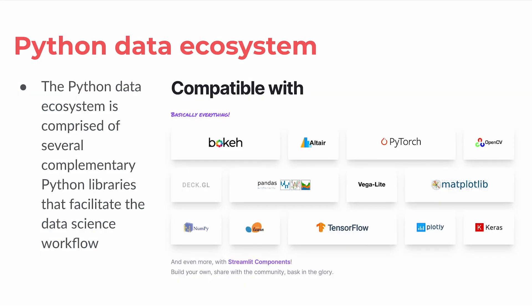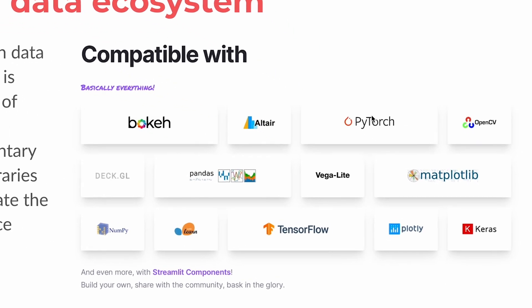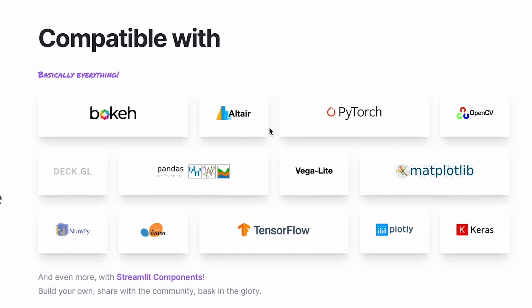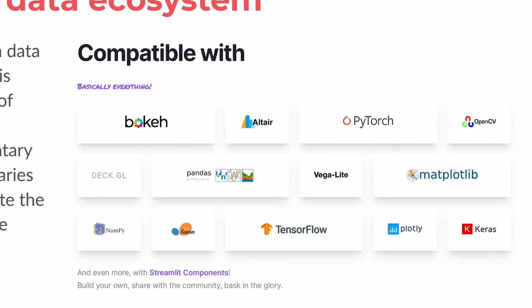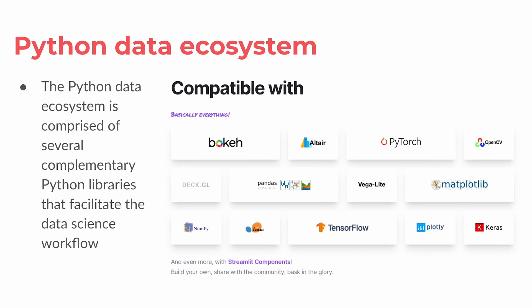Streamlit is compatible with all of the Python data ecosystem — data visualization libraries like Bokeh, Altair, Matplotlib, VegaLite, and DeckGL. It also supports popular machine learning and deep learning frameworks like Scikit-learn, TensorFlow, PyTorch, and Keras, as well as data wrangling libraries like Pandas. You could import all of these Python libraries into your Streamlit application and build an interactive, data-driven app.